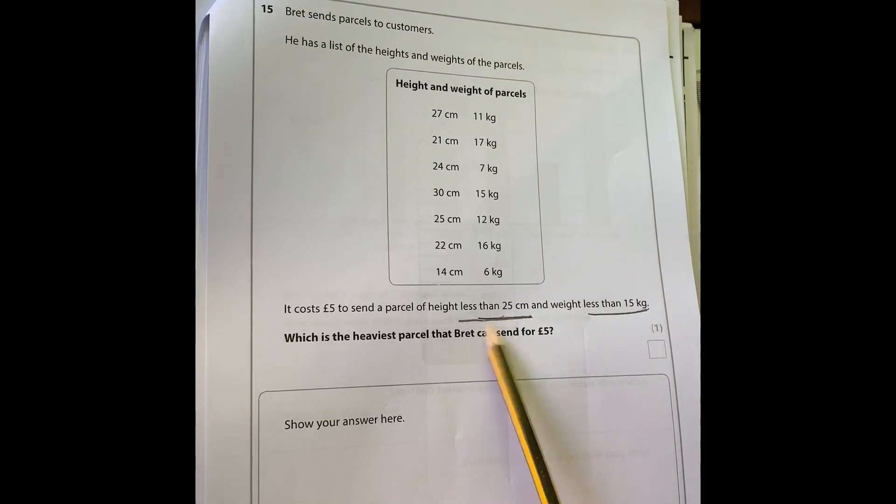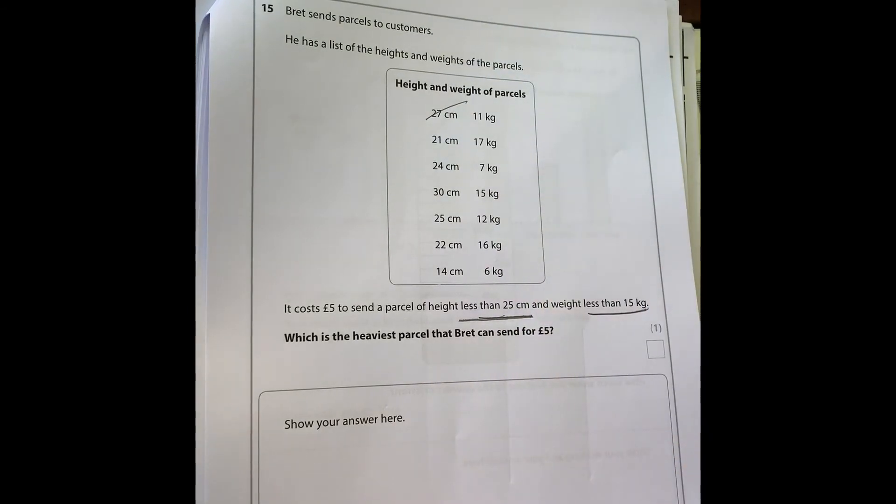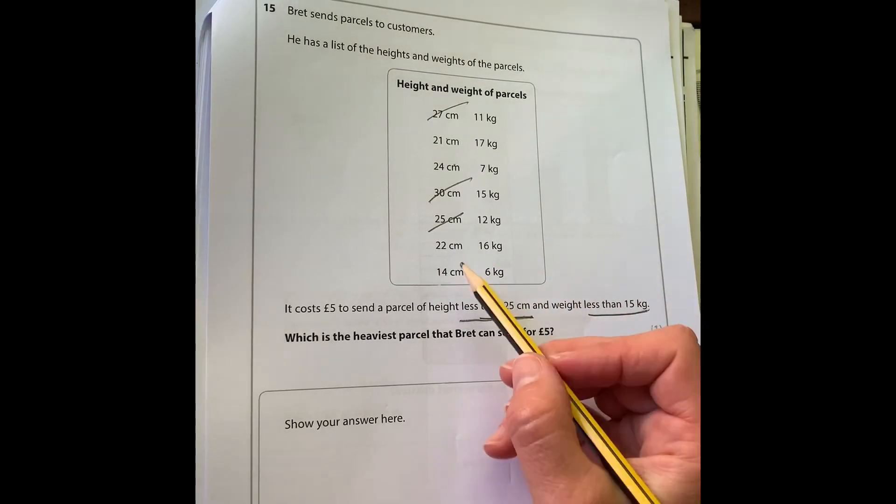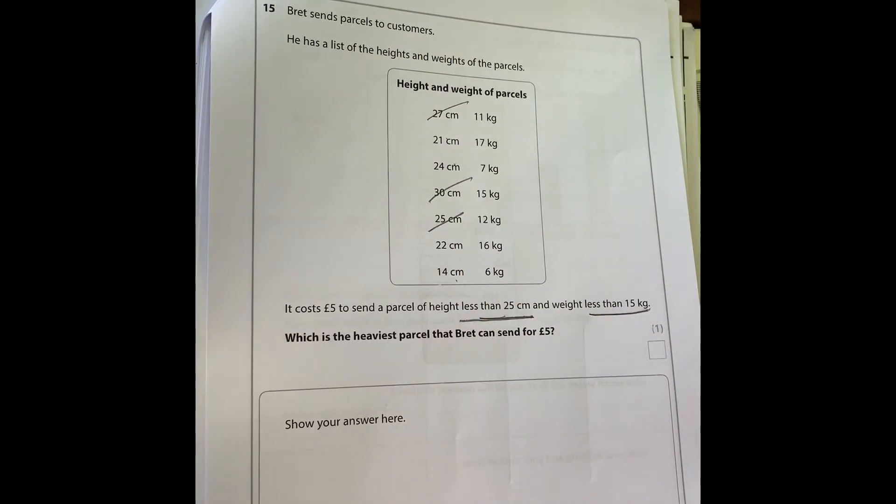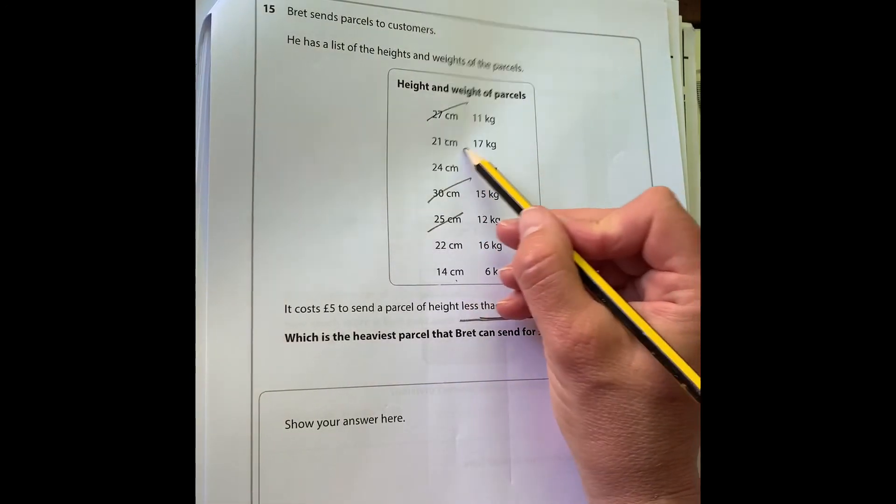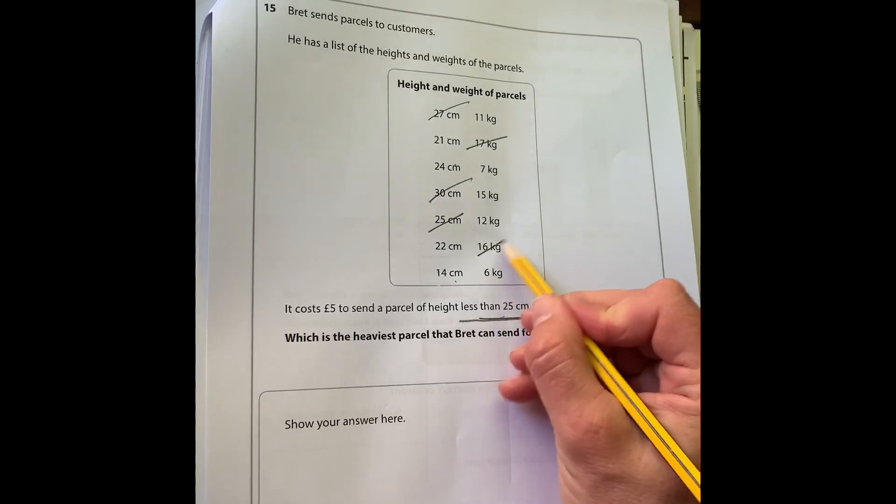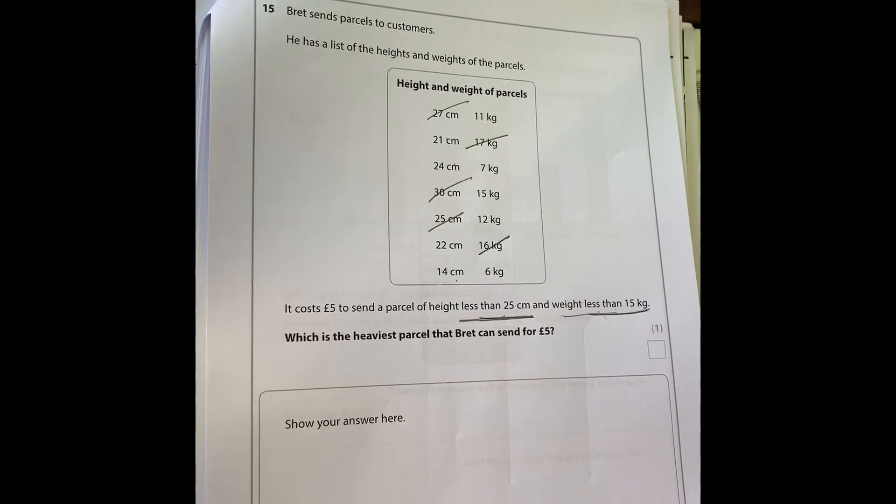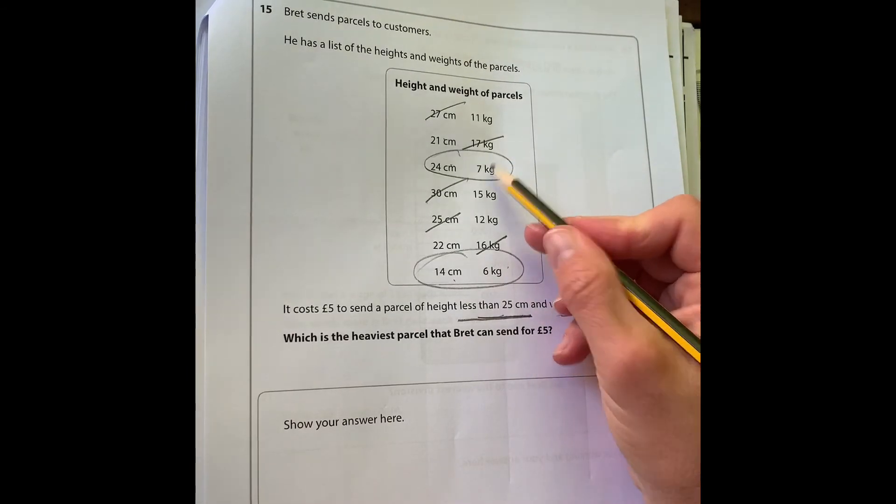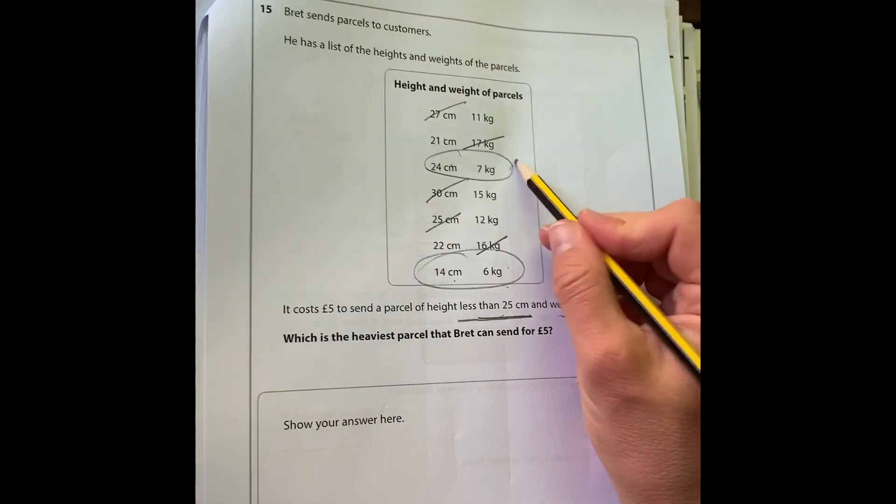Let's look for things that are less than 25. Can't have that one. That's okay, that's okay. Too big, can't have that because it is 25. The others are okay. Now we're looking for the heaviest one, but it's got to be less than 15. Can't be that one because that's bigger than 15. Can't be that one. So now we're left with this one and this one. We're looking for the heaviest one, so as seven kilograms is greater than six kilograms, this is the one: 24 centimeters and seven kilograms.